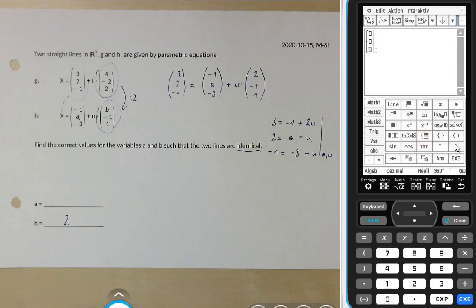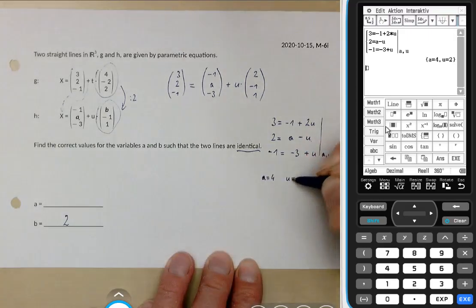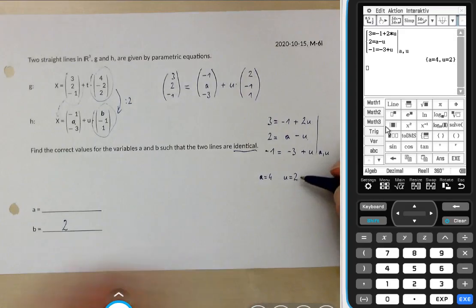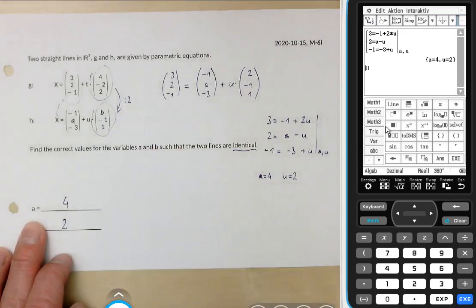This symbol creates a system of equations. We need three equations so hit it again. First equation 3 equals -1 plus 2 times u. Second equation 2 equals a minus u. And third equation -1 equals -3 plus u. The variables are a and u. We get the solution a equals 4 and u equals 2. We are not really interested in u but we're interested in a so the solution is a equals 4.